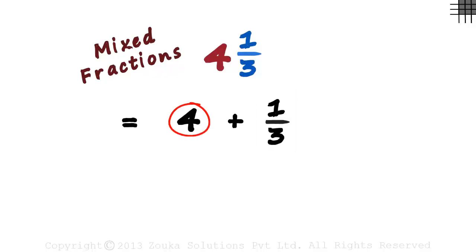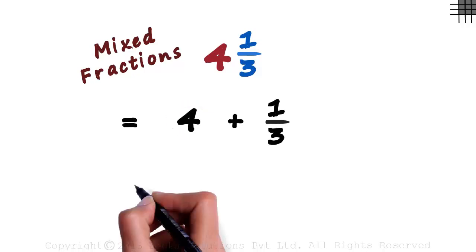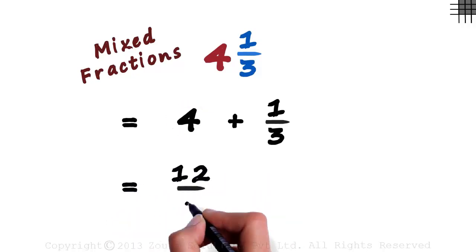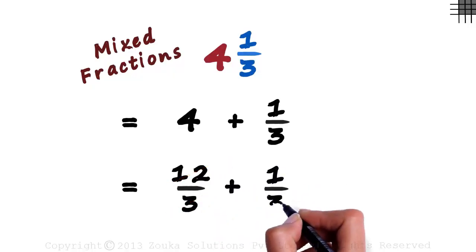Let's write the whole part a bit differently. 4 can also be written as 12 by 3, because 3 times 4 is 12. And we write 1 by 3 as is.